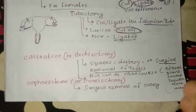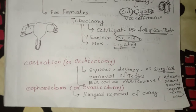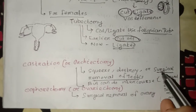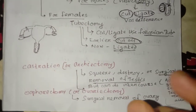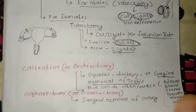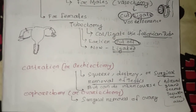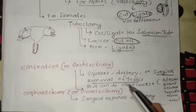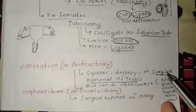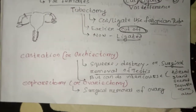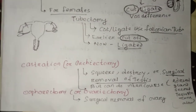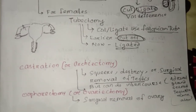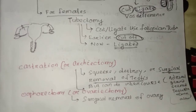Looking at the reverse process — the testis. The testis may heal or suffer. In some procedures, the testes are squeezed, destroyed, or surgically removed. However, if the testes are not removed, sperm will still be released, and the hormone will still be released, but pregnancy will no longer occur.